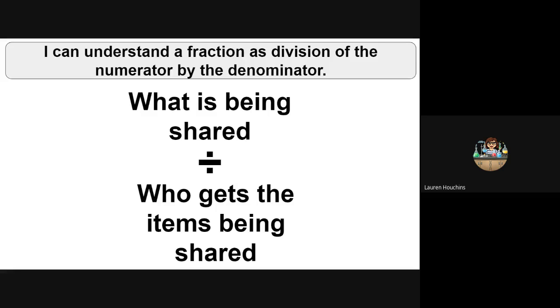So we can remember it like this. What is being shared divided by who is getting the items that are being shared. So what is being shared goes on top, that's our numerator. Who gets the items being shared is on the bottom, that's our denominator.